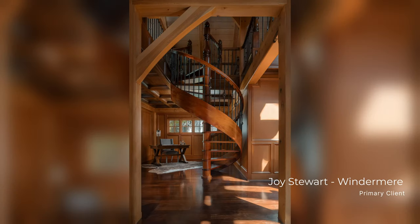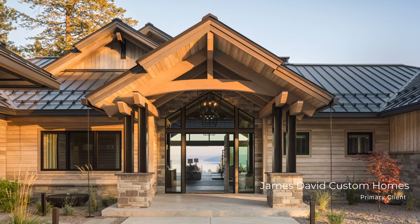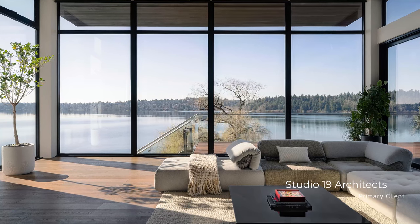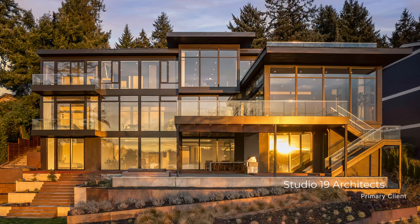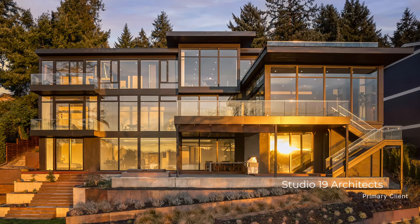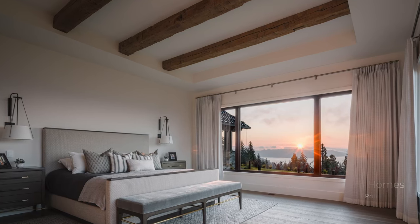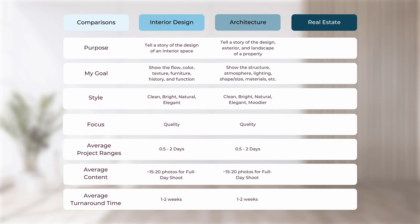Architecture media is similar to interior design, but it goes beyond just capturing the interiors of a space — it also adds the story of the exterior and landscape. My goal is to capture the overall structure, atmosphere, unique lighting or shapes, building materials, size, and the function of the building itself, as well as the surrounding areas. I do tend to prioritize more sunrise and sunset shots, which adds depth and that perfect golden hour look. You can also expect an average of 15 to 20 photos from a full day photo shoot with about one to two weeks of editing time — again, quality over quantity.